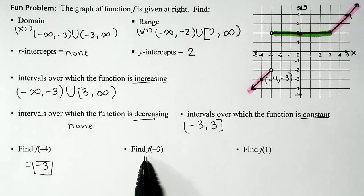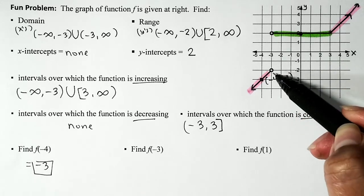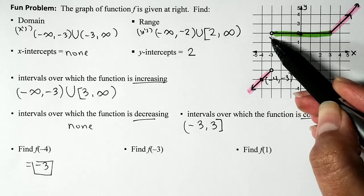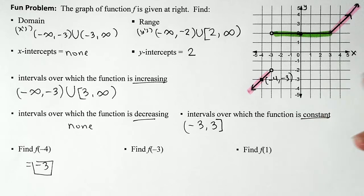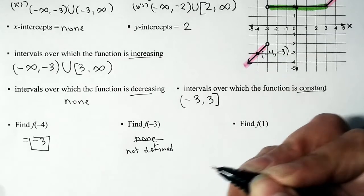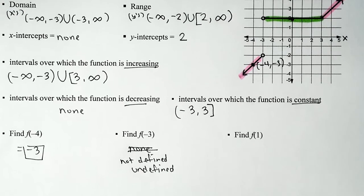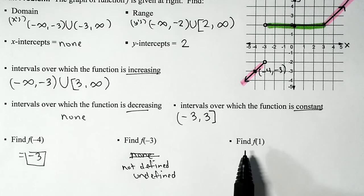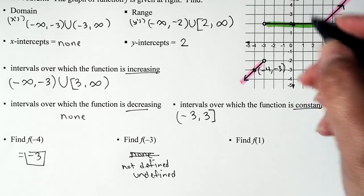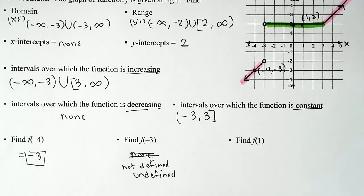f(-3): I locate negative 3 on the x-axis. Going down, that point is not on the graph — open circle. Going up, that point is also not on the graph — open circle. The function is not defined at x equals negative 3, so f(-3) is undefined. f(1): locate 1 on the x-axis, go up to hit the graph — the point is (1, 2). So f(1) = 2. That covers all the problems — thanks guys!